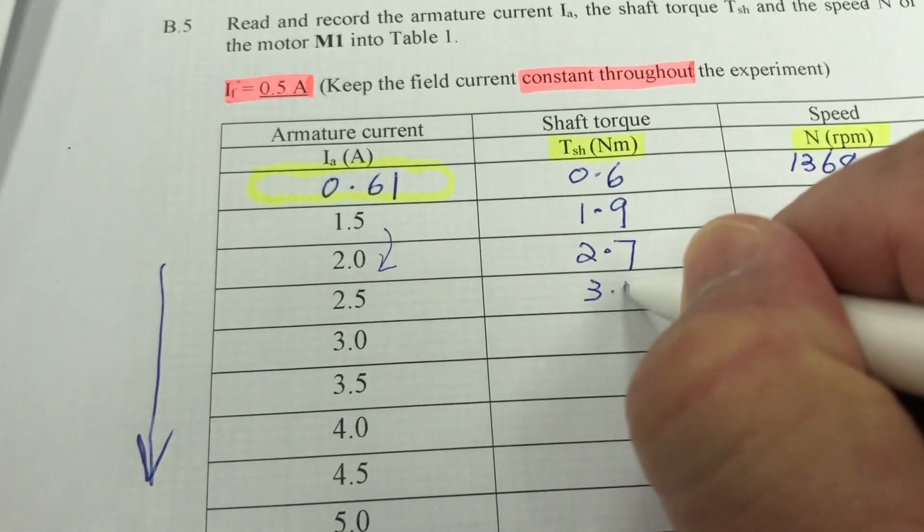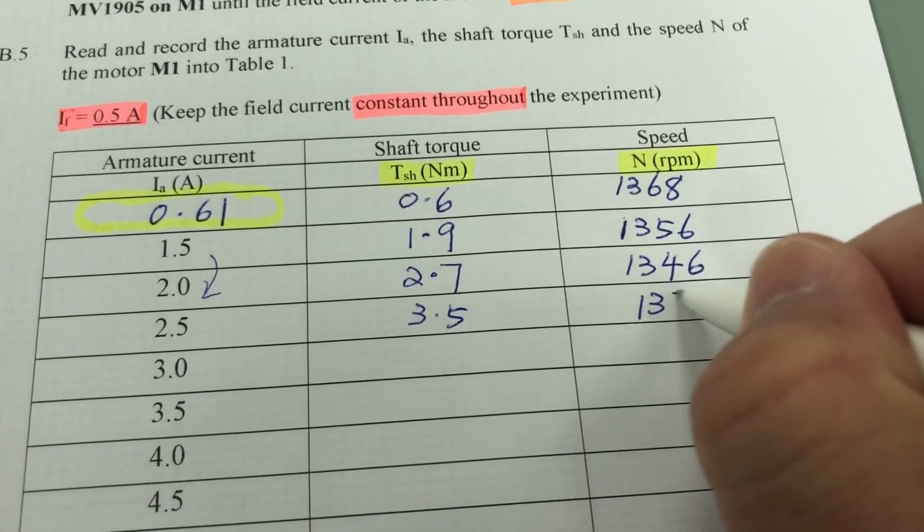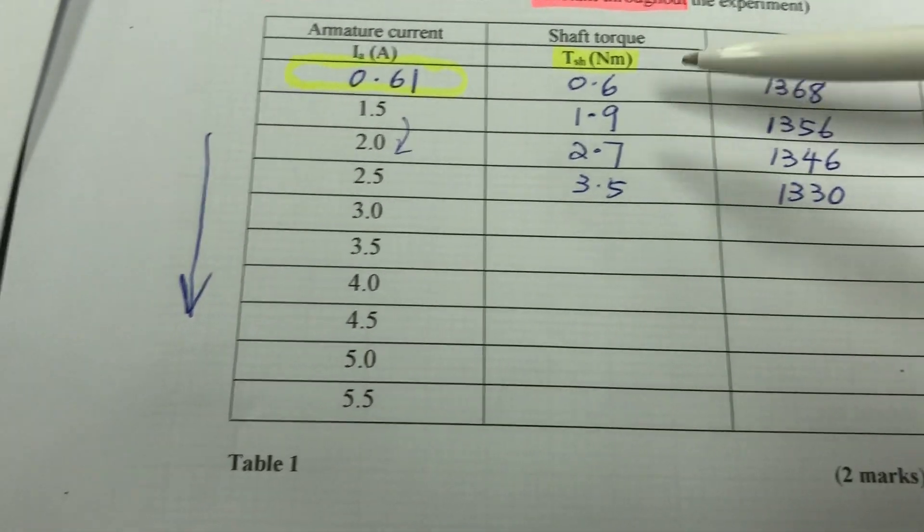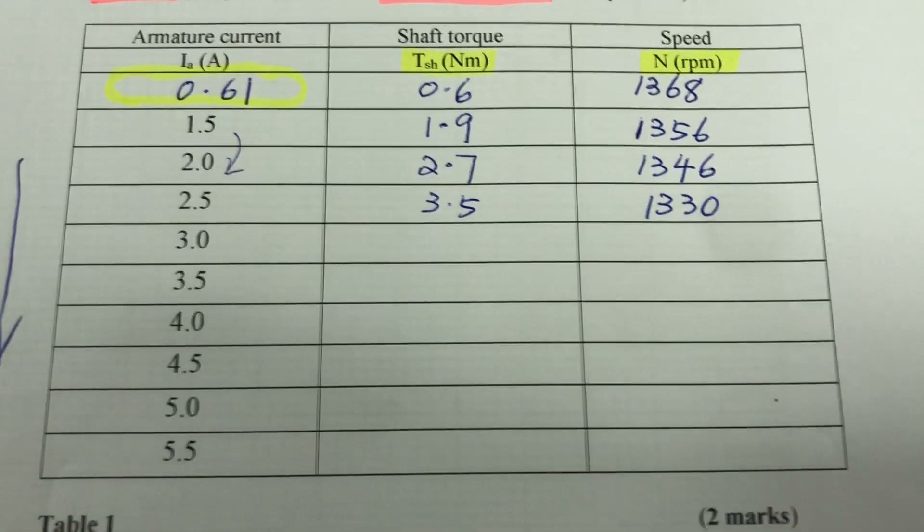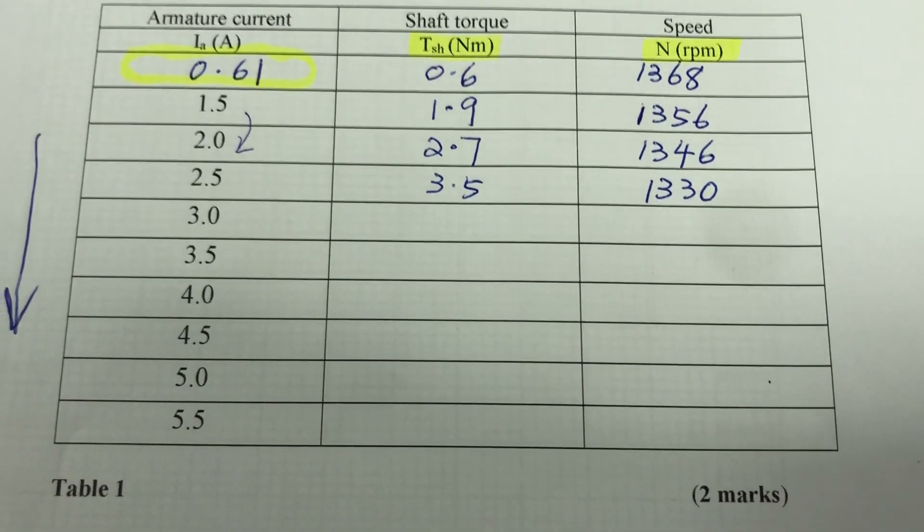Okay so 3.1 Newton meter and 1330 RPM. Okay this will go right to the end until it is 5.5 ampere armature current, the rated value. So I'll stop the recording here.